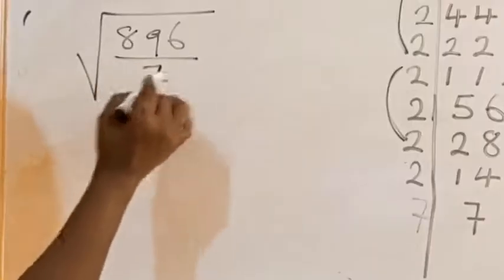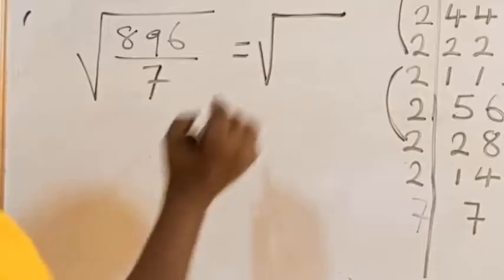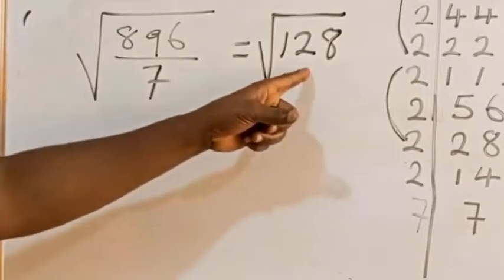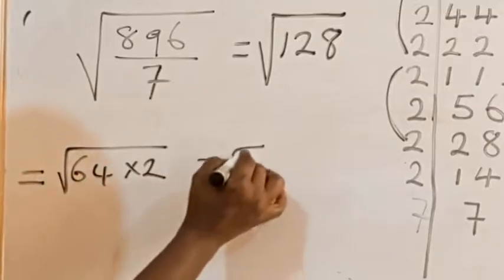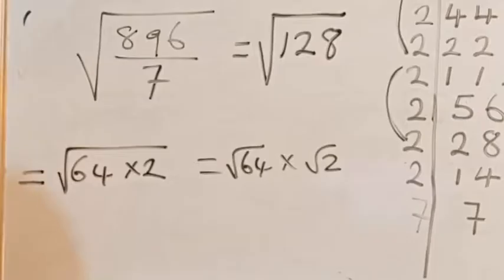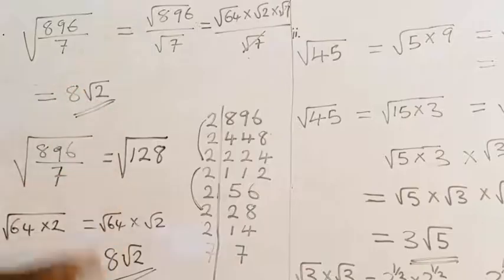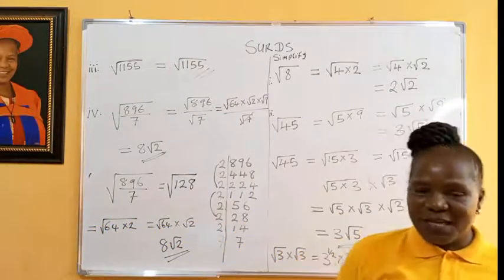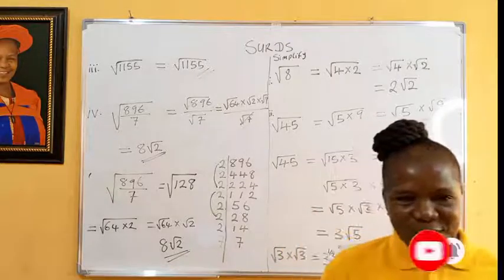Alternatively, you can combine the sign to divide out 7 inside, giving surd of (896 over 7) equals surd 128. And 128 equals 64 times 2, so surd 128 equals surd 64 times surd 2, which gives 8 surd 2. So whichever way you choose, it's still okay — it's still the same thing, because the law says it is the same. We end here for today. I call on you to subscribe to my channel if this is the first time. I wish you good luck, and God bless you in Jesus' name, amen, bye-bye.